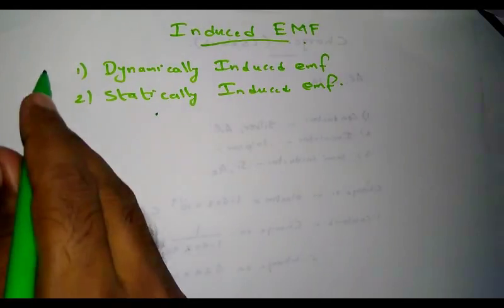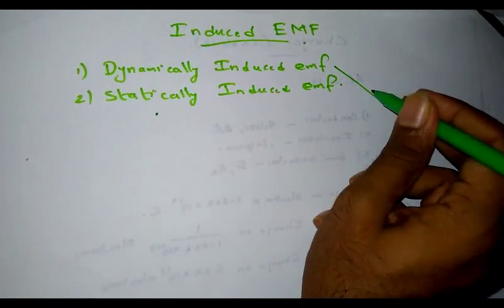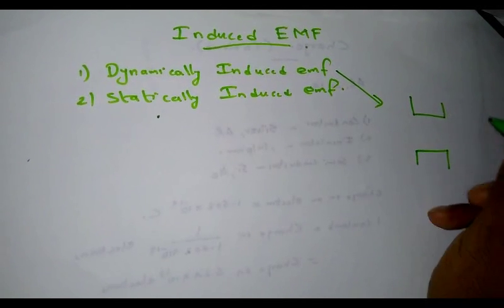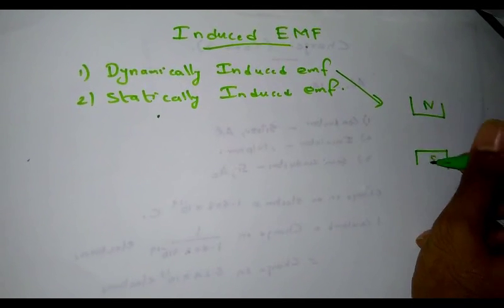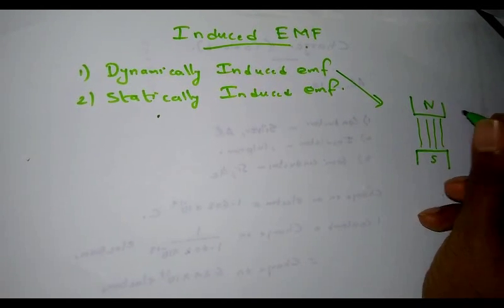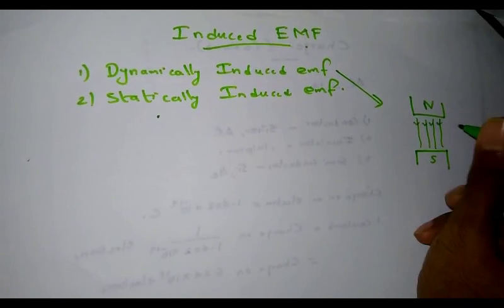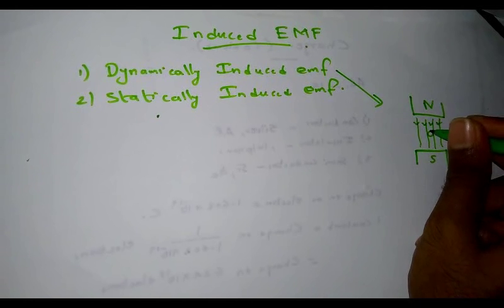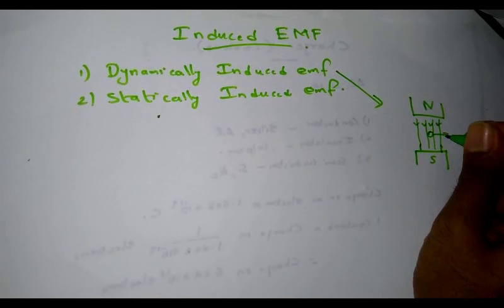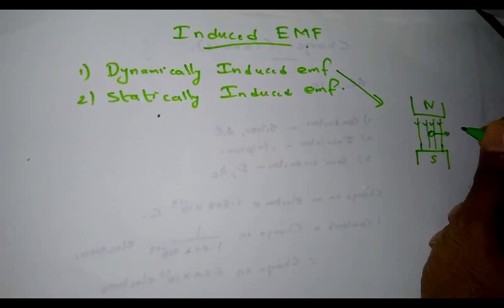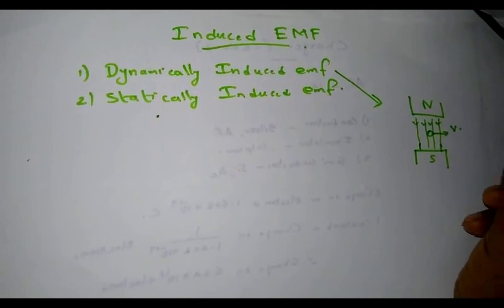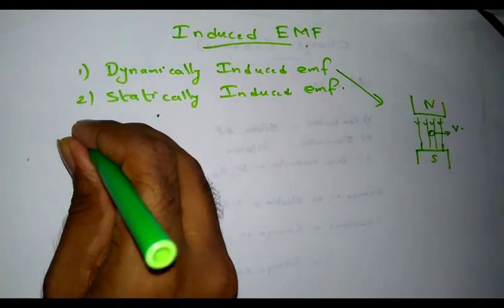Let's go through dynamically induced EMF. Consider a constant magnetic field — a North Pole and South Pole — with magnetic field lines going from North Pole to South Pole. A conductor is placed inside this magnetic field, and I am going to move the conductor with a velocity v. Let l be the length of the conductor.